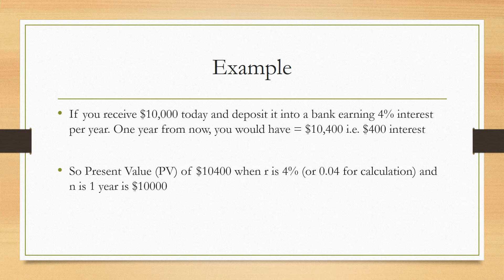Using r = 0.04 and n = one year, the present value of ten thousand four hundred dollars as of today is ten thousand dollars. To repeat: if the rate of interest is four percent and you plan to keep the money in the bank for one year — r is four percent and n is one year — then the present value of ten thousand four hundred dollars is ten thousand dollars. That is what this formula is used for.